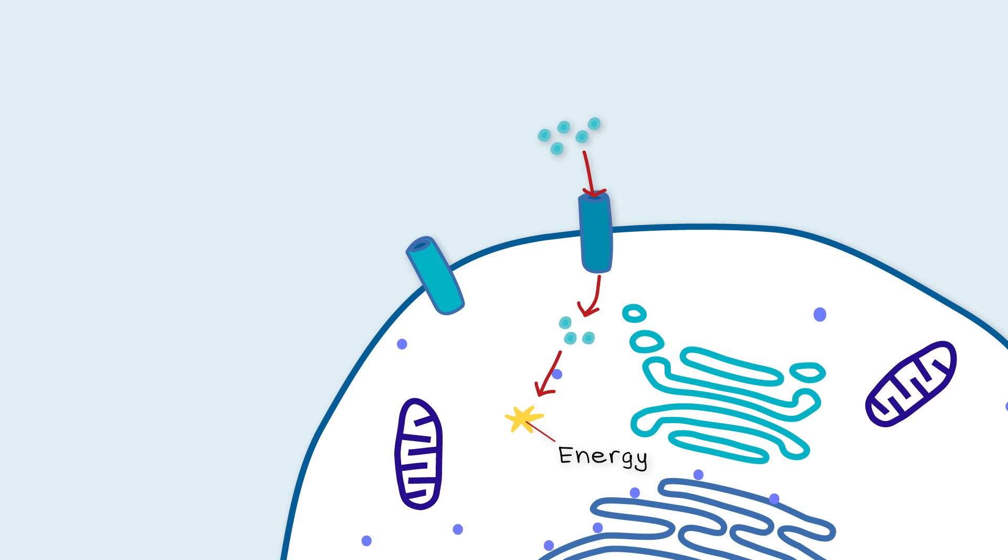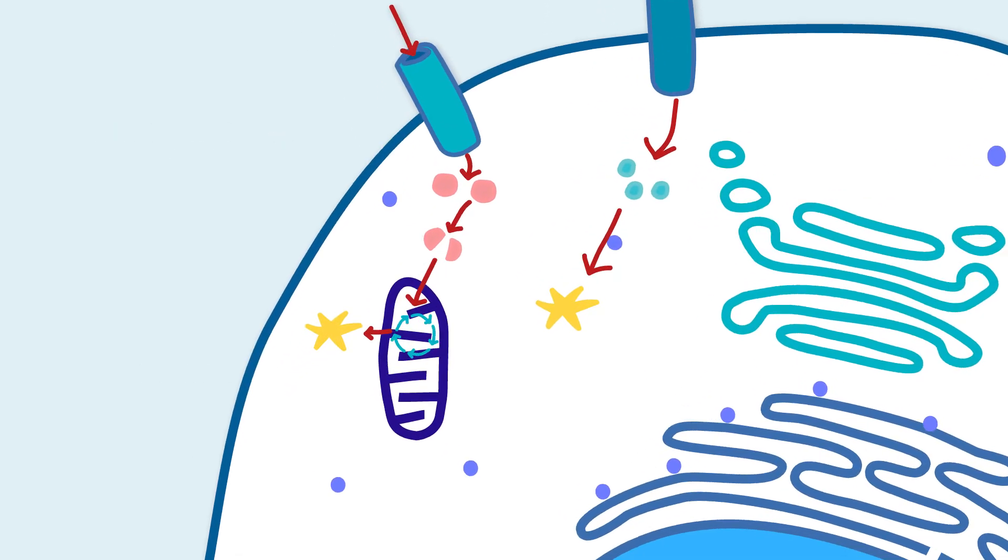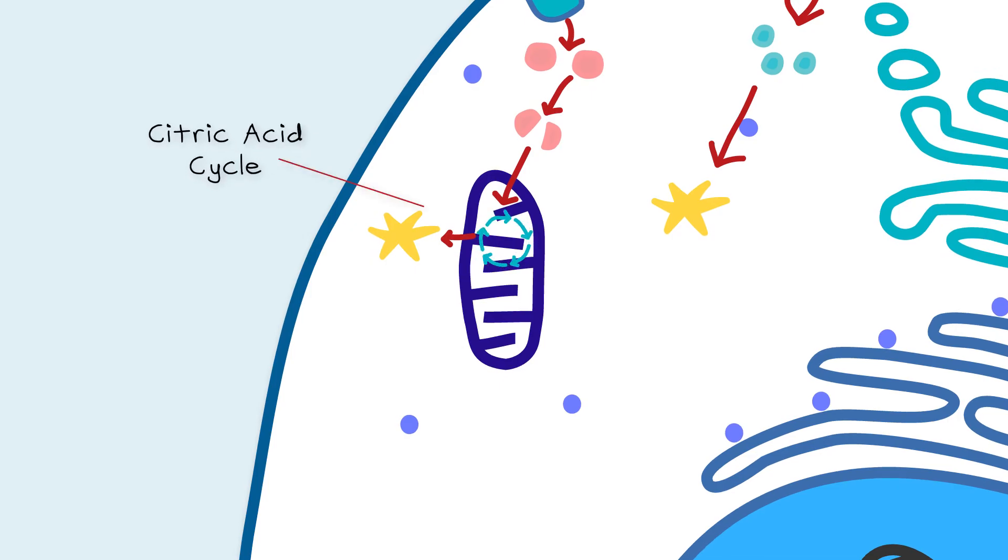This process is called glycolysis. On the other hand, fatty acids that are taken up by cells are first broken down in the cytoplasm and then transported to the mitochondria, where energy is generated from a set of chemical reactions called the citric acid cycle and the electron transport chain.